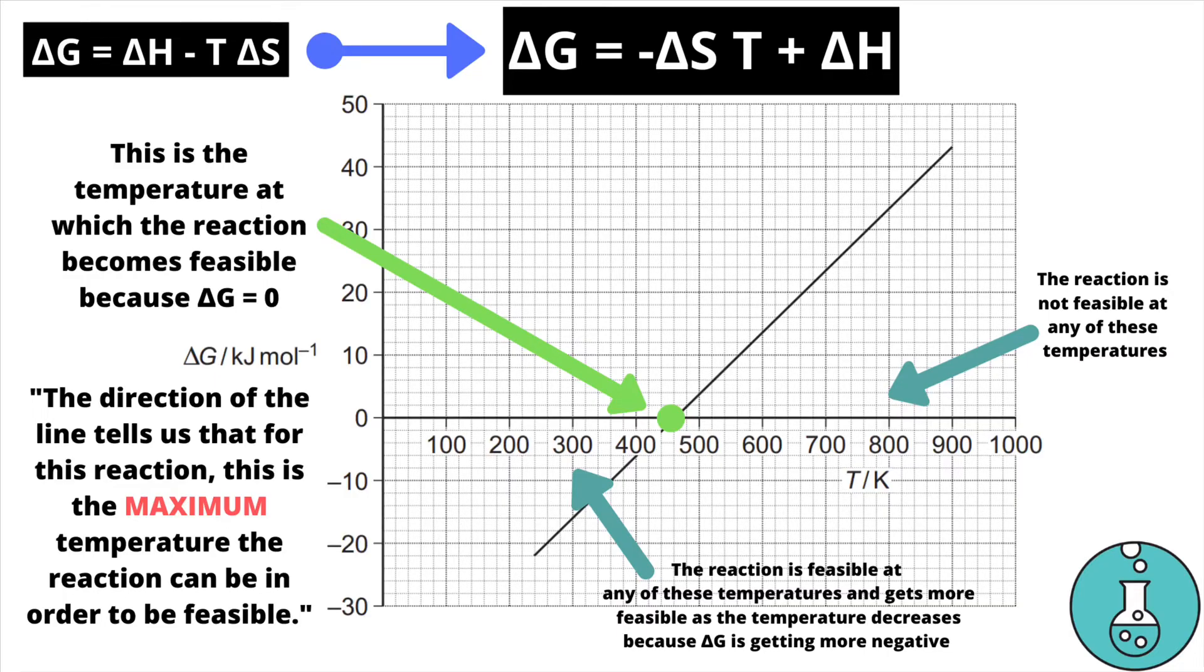What this means for our graph is all the points to the left of the green dot that you can see now where we can see our temperatures give us a negative delta G are temperatures at which the reaction is feasible or we can say spontaneous. Those points on the line which come after the point we've crossed the x-axis are however temperatures at which the reaction is not feasible because delta G will be positive. Therefore the significance of this temperature where we've crossed the x-axis is that it represents the maximum temperature for our reaction to remain feasible. Any higher than this temperature and the delta G is positive.